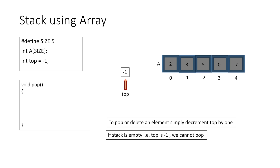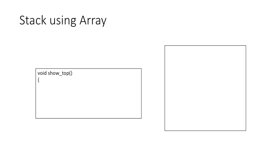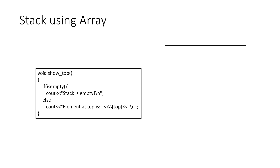Taking this into consideration, in our pop function we first check if the stack is empty using the isEmpty function. If it is empty, we print that the stack is empty and the pop operation cannot be performed; else we decrement top by 1 to remove the topmost element. Next, the showTop function checks if the stack is empty — if so it prints accordingly; otherwise it displays the element at the top.